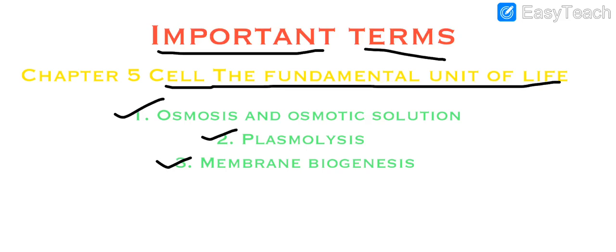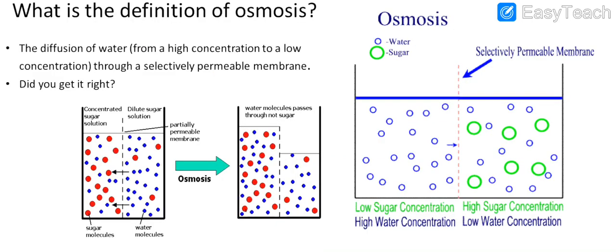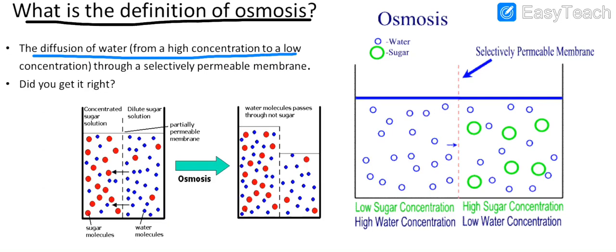We have already discussed these in our previous videos, but to make it more clear I wanted to explain each separately. What is the definition of osmosis? Osmosis is the movement of water molecules from higher concentration to lower concentration through a selectively permeable membrane.